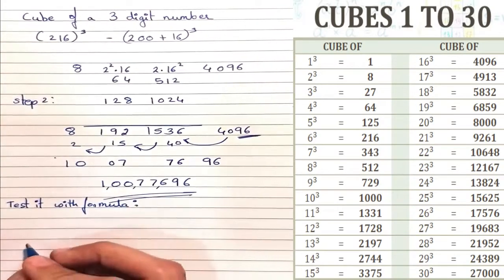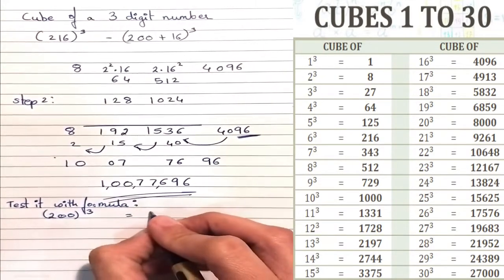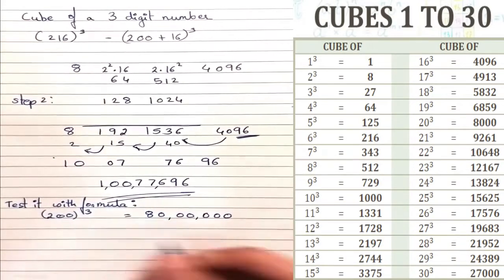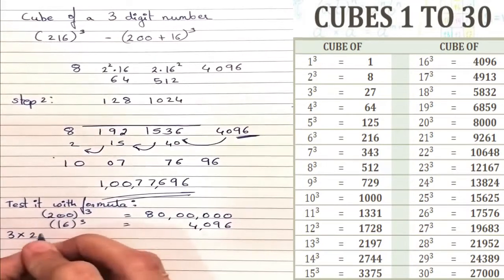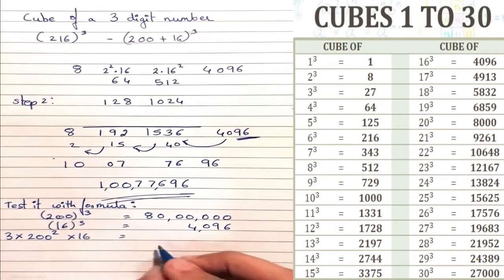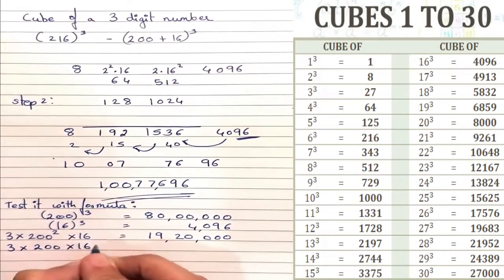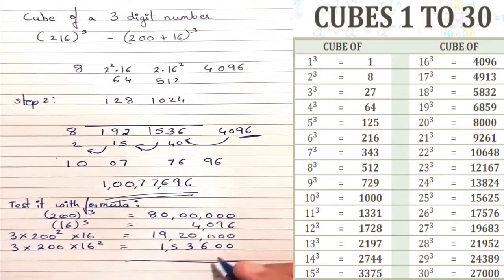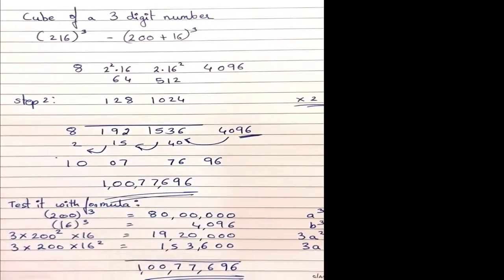Now let's verify with the full formula. a³ = 200³ = 8,000,000. b³ = 16³ = 4096. Then 3a²b = 1,920,000 and 3ab² = 153,600. Adding all these numbers gives the same result as our shortcut answer.